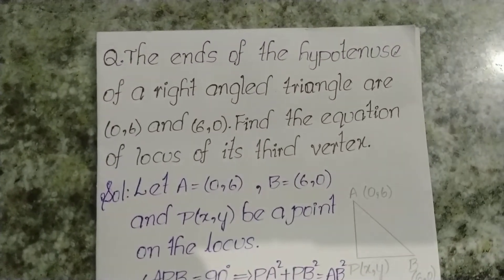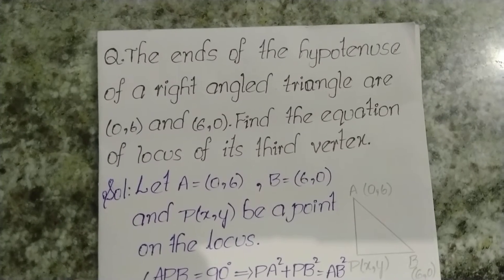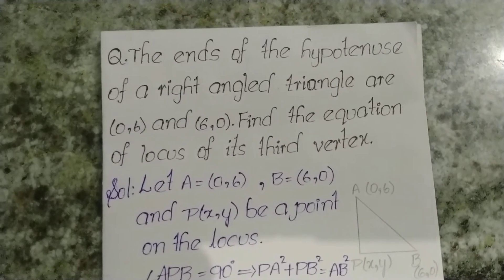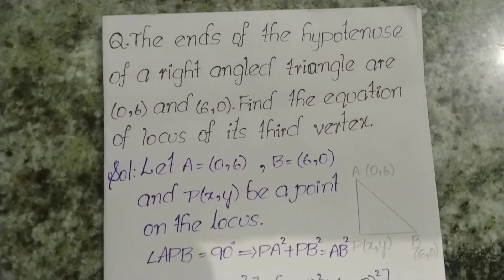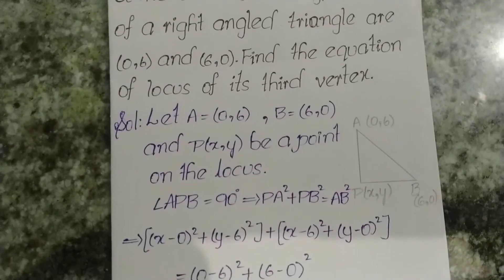We have to discuss the locus problem. The ends of the hypotenuse of a right-angled triangle are (0,6) and (6,0). Find the equation of locus of its third vertex. Let A = (0,6), B = (6,0), and P = (x,y) be any point on the locus.